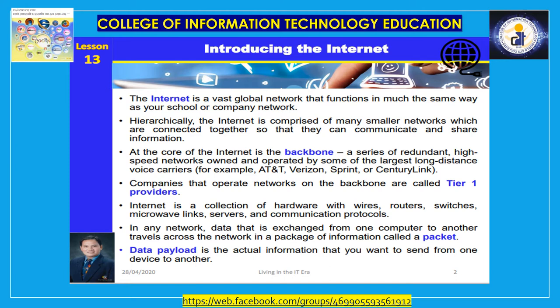The information you view in your browser comes to your computer through a series of networks. The internet is a vast global network that functions in much the same way as your school or company network. Hierarchically, the internet is comprised of many smaller networks which are connected together so that they can communicate and share information. At the core of the internet is the backbone — a series of redundant, high-speed networks owned and operated by some of the largest long-distance voice carriers, such as AT&T, Verizon, Sprint, or CenturyLink.